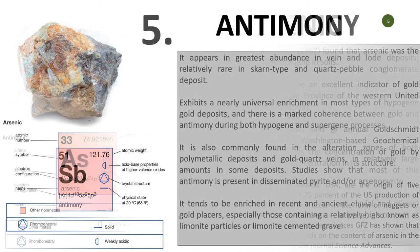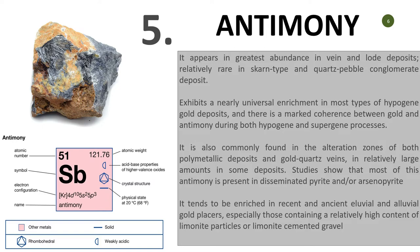Number five is antimony. Antimony, with atomic number 51, is a solid element and weakly acidic. It is found in abundance in veins and lode deposits. It is also commonly found in the distal threshold zones of both polymetallic deposits and gold-bearing quartz veins, sometimes in really large amounts. It also tends to be enriched in both the eluvial and alluvial gold places, especially those containing a relatively high content of limonite particles or limonite cement gravel.